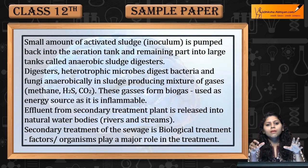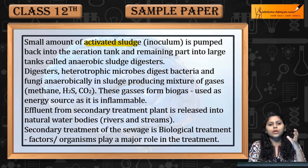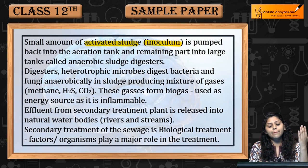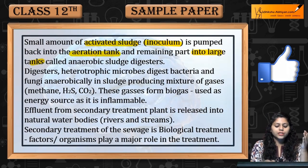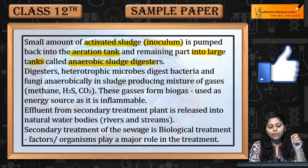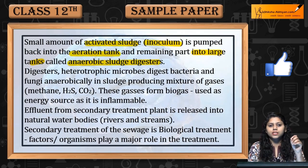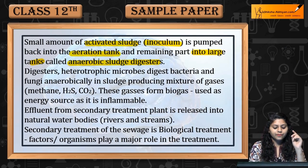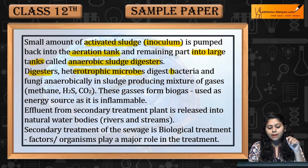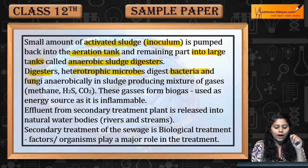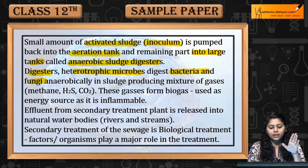Small Amount of Activated Sludge को as Inoculum यूज़ करते हैं, Pump Back करते हैं Aeration Tank में, और जो Remaining Part है उसे Large Tanks में, जिन्हें Anaerobic Sludge Digesters कहते हैं, उसमें डालते हैं. Digesters में Heterotrophic Microbes होते हैं, वो Digest करते हैं Bacteria को और Fungi को anaerobically.